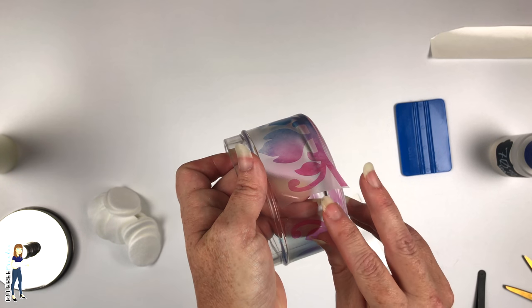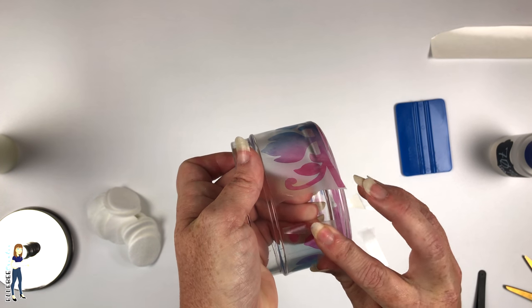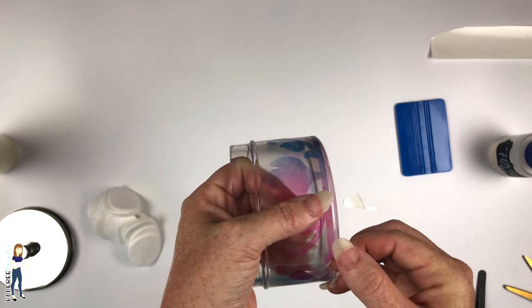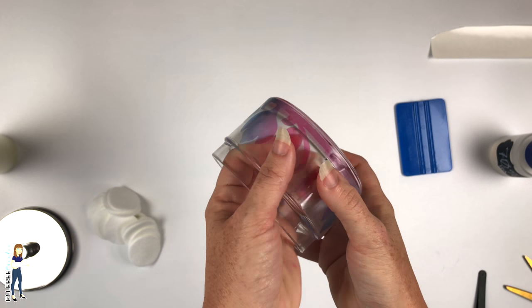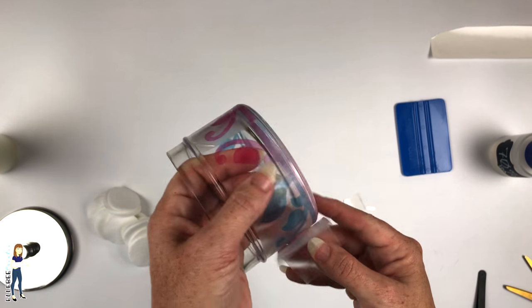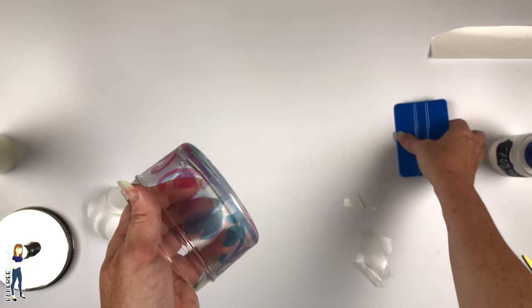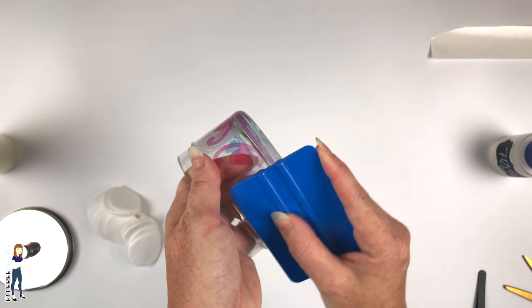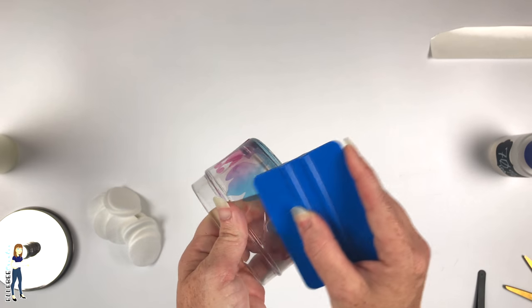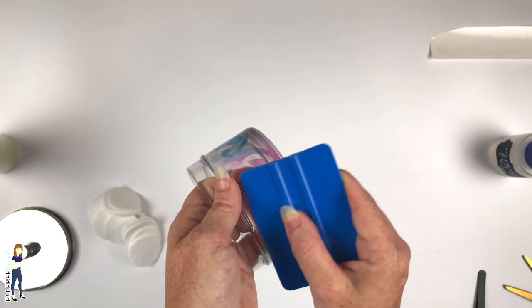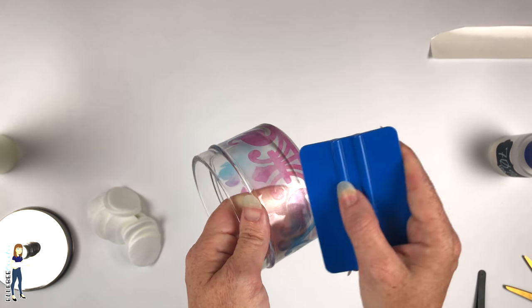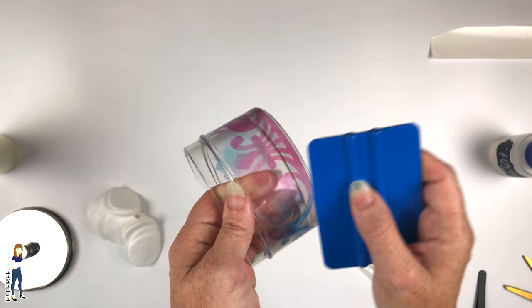We do have a little tiny overlap right there, so I want to make sure that I pull back this transfer tape. Then we're just going to pull it off and go through and burnish it down. It sticks really well. The glass should be pretty easy, and this is a nice medium tack transfer tape, so it doesn't take a ton of effort to get it to release.